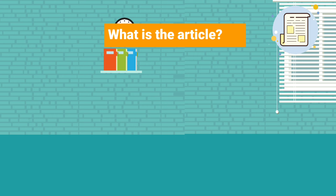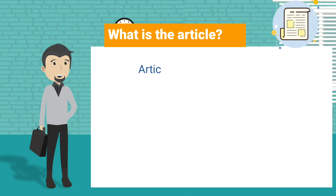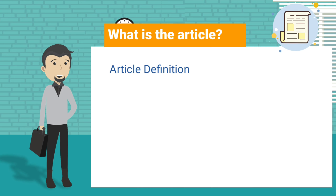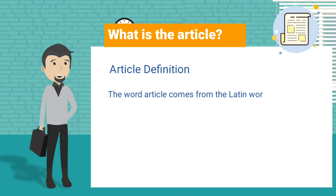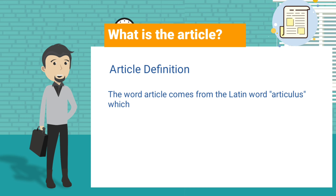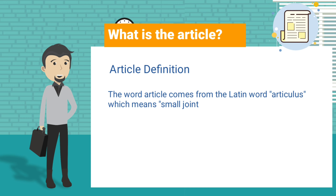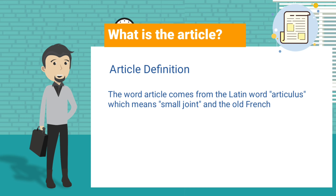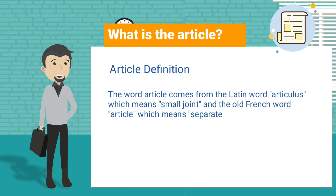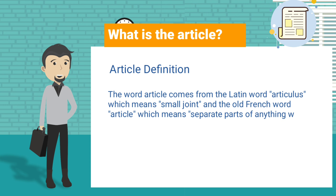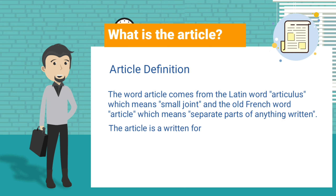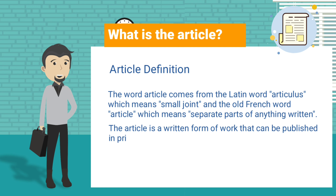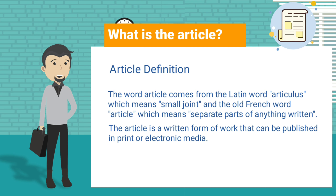What is an article? The word 'article' comes from the Latin word 'articulus,' which means 'small joint,' and the old French word 'article,' which means 'separate parts of anything written.' The article is a written form of work that can be published in print or electronic media.